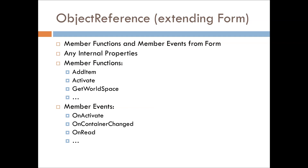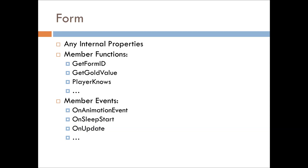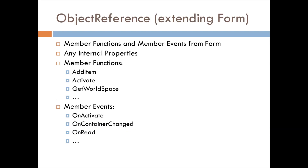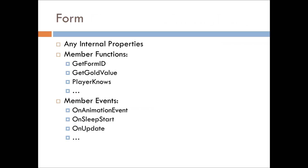Note that you can use GetFormID, GetGoldValue, PlayerKnows, or OnAnimationEvent, OnSleepStart, or OnUpdate whenever you're working with an ObjectReference. That's important to know in your various scripts. One caveat: OnRead is only specific to books — there are a few of these in weird places in script objects that are only applicable to certain items. But for the most part, probably 90% or more — if it's on Form and you have something extending Form directly, it's going to be able to access Form.